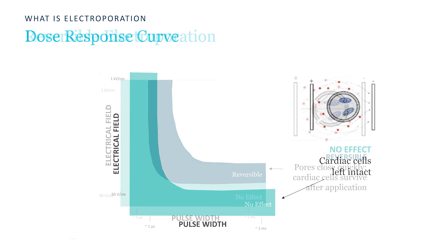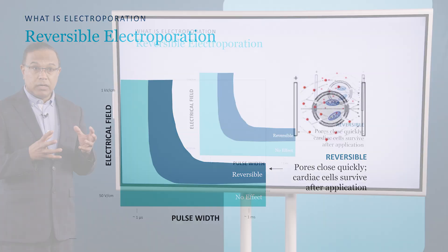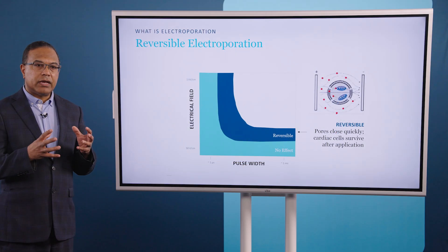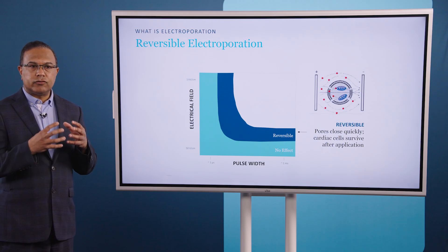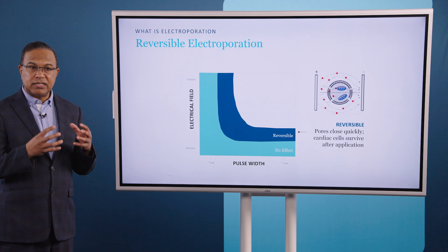However, if we start to increase the magnitude of the field, as well as the duration of the field, we can get what is called reversible electroporation, where the membrane pores form. However, they rapidly reseal so that cellular integrity and cellular function is maintained.